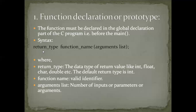The syntax for function declaration is: return type, function name, argument list. The return type is the data type of the return value — integer, float, character, double, etc. By default, the return type is integer. The function name is a valid identifier — you can use any meaningful name. The argument list is the number of inputs or parameters being passed to the function.